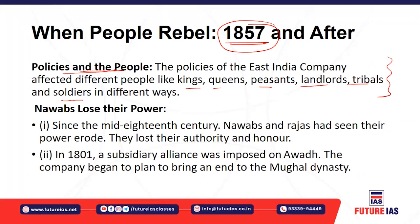The Nawabs in Bengal lost their power and sovereignty over the land. In the mid-18th century, Nawabs were frequently changed with the help of the British. They lost all their authority, all their power — their power was eroded. They also lost their honor. That we saw in our last class.